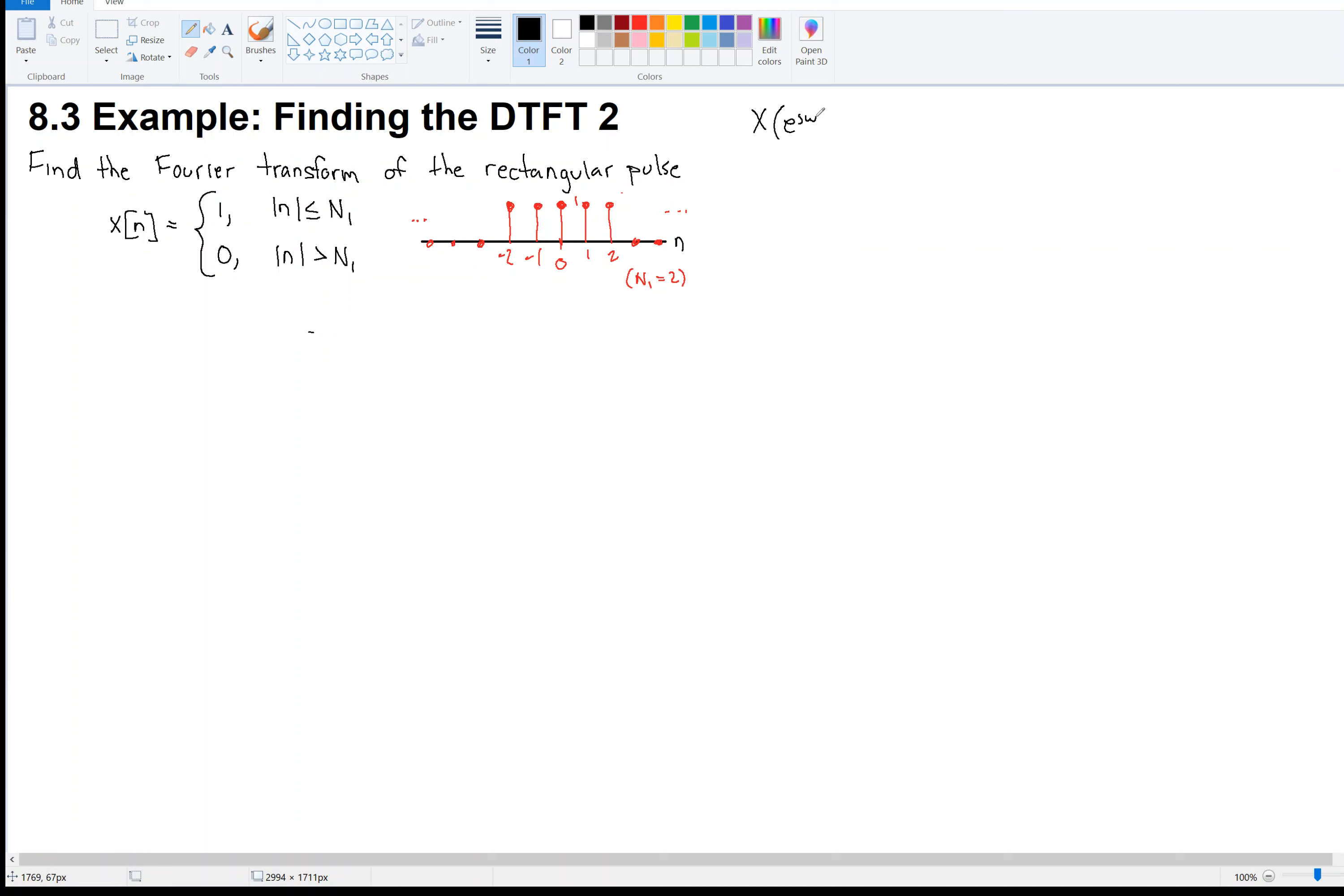So we've got the analysis equation. X is equal to the sum from n equals minus infinity to infinity of x of n times e to the minus j omega n. So we have to figure out what that sum is. Now, that's an infinite sum. However, the zeros contribute nothing to the sum.